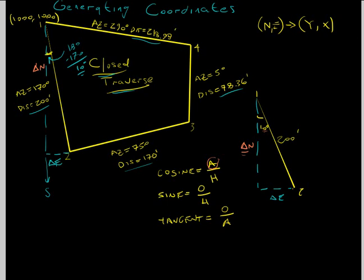So we're going to say that the cosine of 10 degrees is equal to the change in northing over 200 feet. So multiply by 200. Multiply by 200. We have the change in northing. Change in northing is equal to, I'm going to get my calculator out here, 200 times 10 cosine equal to 196.96 feet.